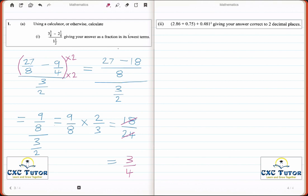So firstly, we take my calculator and you solve what is in the bracket first. So 2.86 plus 0.75 is equal to 3.61. And 0.481 all squared is equal to 0.231361.